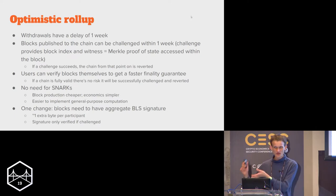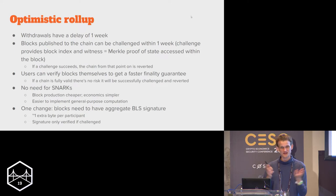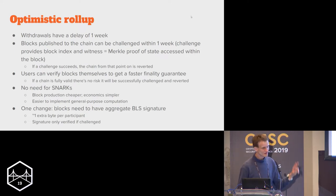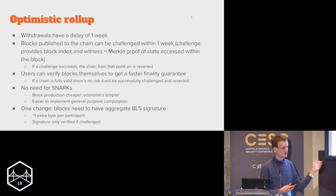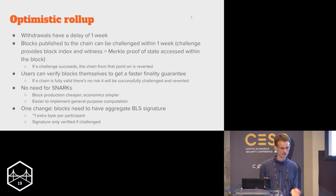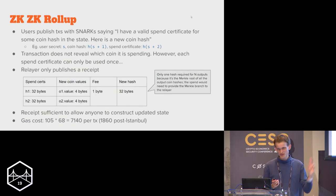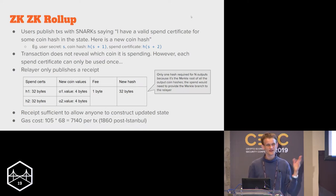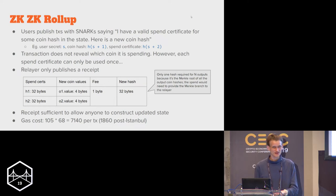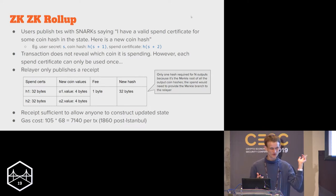SNARKs and interactive challenge-response games are in many cases competitors. The one other thing optimistic rollup needs to be efficient is signature aggregation — BLS has really nice signature aggregation. ZK-ZK rollup is basically ZK rollup where the thing inside the ZK rollup is itself privacy-preserving transactions. Since we have to name new scaling protocols after states of matter, I've decided we should call ZK-ZK rollup a Bose-Einstein condensate.